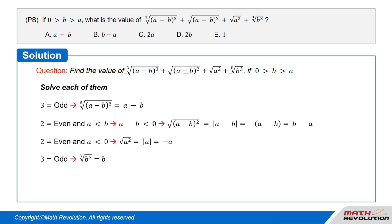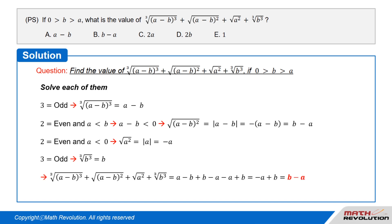Since 2 is even and a is less than 0, square root of a squared equals the absolute value of a, which equals negative a. Since 3 is odd, cube root of b cubed equals b. Combining all terms: (a minus b) plus (b minus a) plus (negative a) plus b equals negative a plus b, which equals b minus a.